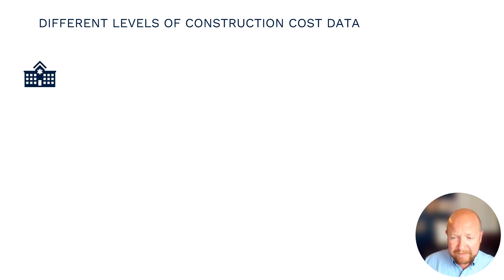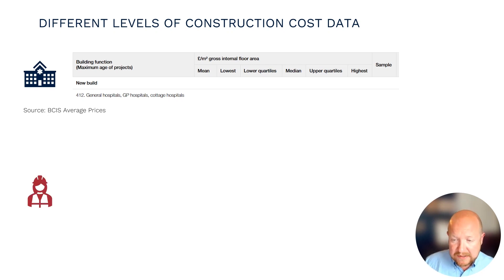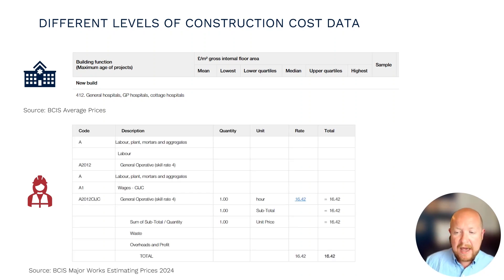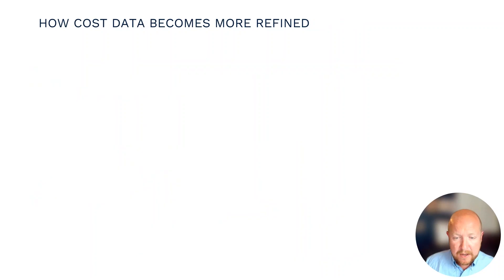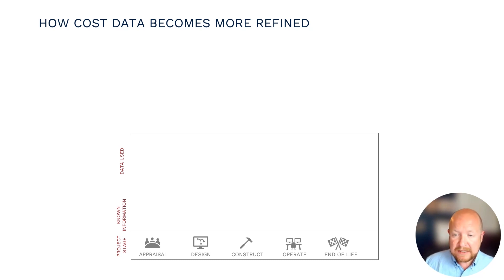To give a couple of examples of what this might look like with BCIS data, keeping with the hospital example, in our average prices we have cost data for different kinds of hospital facilities, providing a range of high-level cost estimates. From there we can travel all the way down to individual resources — in this case, labour operative use in a major works estimating guide — where we have a cost per hour for completing a specific work activity.